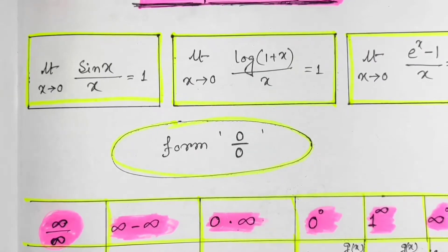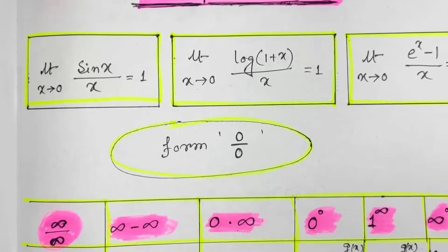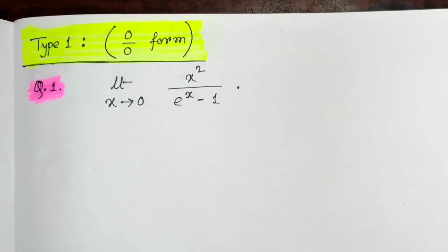Before starting with lots of examples, we need to learn how to identify that a function is indeterminate, and which type of indeterminate form it is. After identifying those, we will proceed to solve the problems. So let us start with an example.